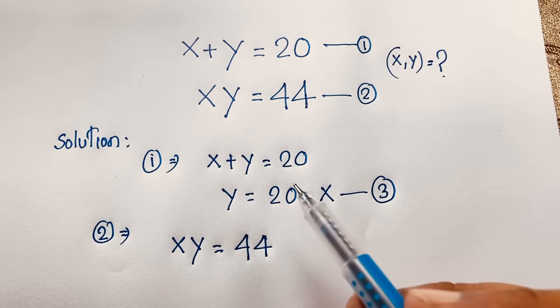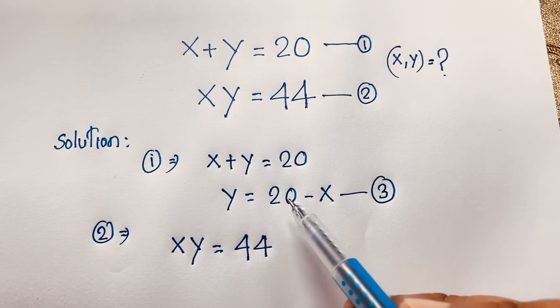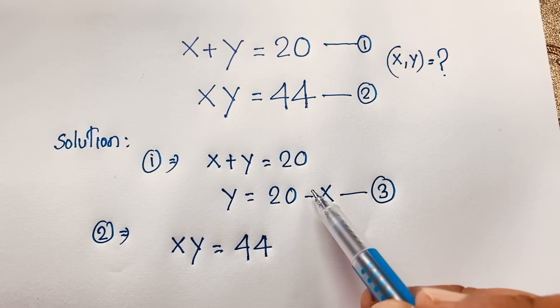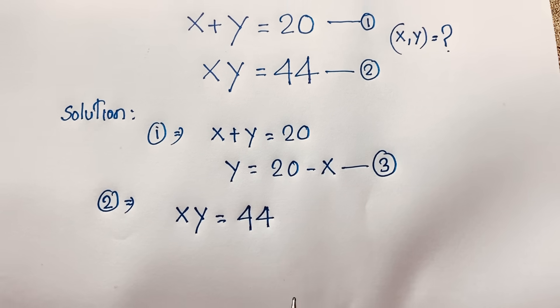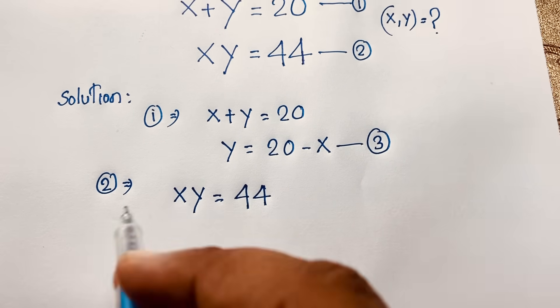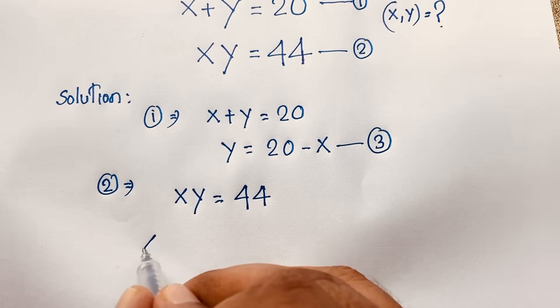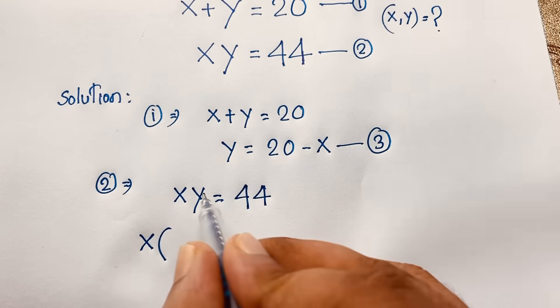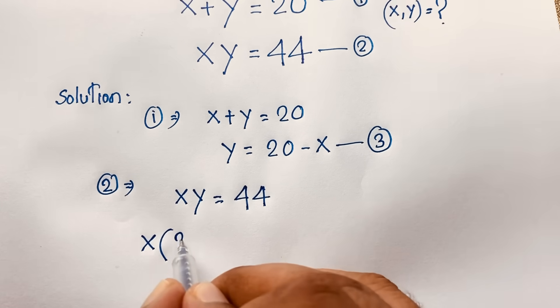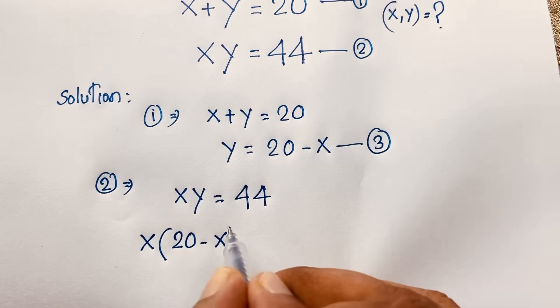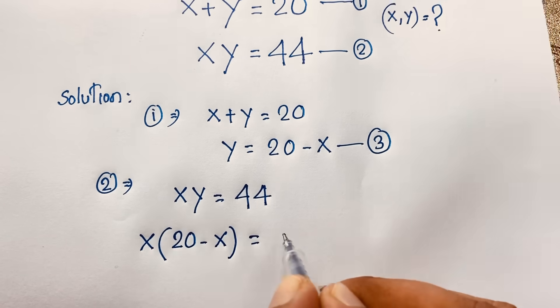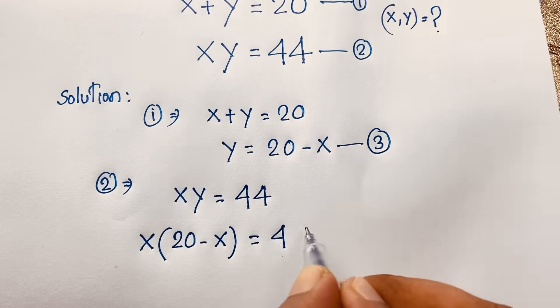Now remember that y is equal to 20 minus x. I substitute this value into the second equation, so it will be x times (20 minus x) is equal to 44.